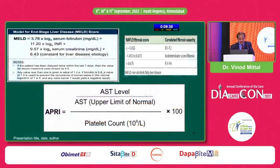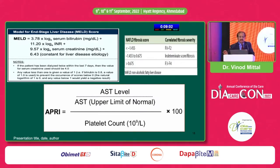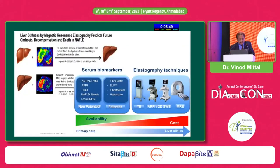Other models include MELD — the Model for End-Stage Liver Disease — which is a calculation of risk. APRI, the AST-to-Platelet Ratio Index, is very important. You take the patient's SGOT divided by the upper limit of SGOT, divided by the platelet count, multiplied by 100. It's very easy — you just need a CBC including platelets and SGOT. An APRI more than one indicates risk for NAFLD. This can be done easily without an ultrasound. Magnetic resonance elastography is one of the best imaging modalities, though costly.